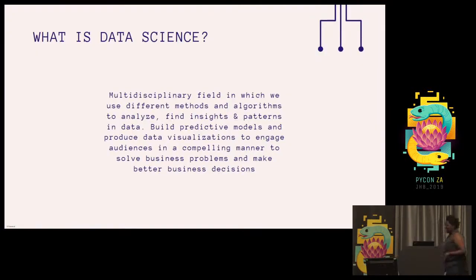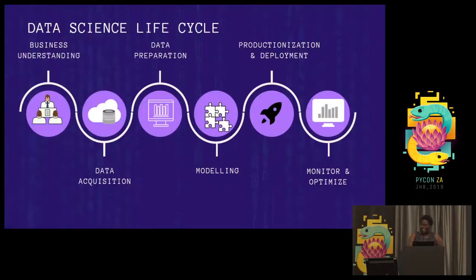So I go to my trusty source, my trusty buddy being Google. I Google what exactly is data science, which is a multidisciplinary field in which you have different methods and algorithms in order to find insights and patterns in data, build predictive models, and produce data visualizations to be able to engage audiences in a compelling and effective way. Obviously, you do all of this to solve business problems and make better business decisions. Thank you, Google. I find something that breaks it up even more, which is the data science lifecycle. Apparently, I was only doing the one in the middle, which was modeling, did not do anything before and after.